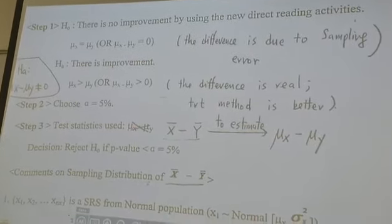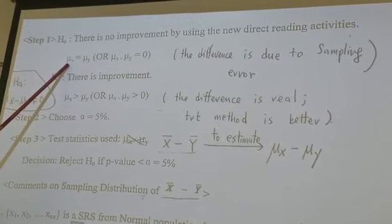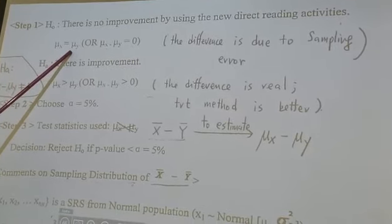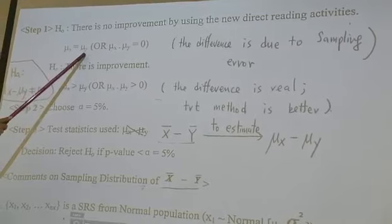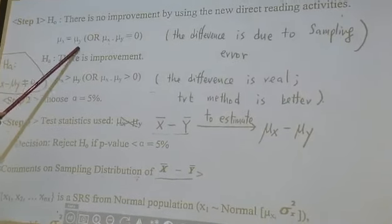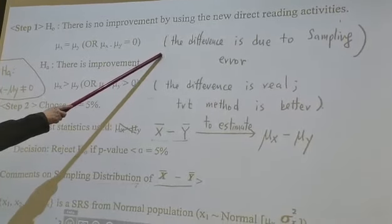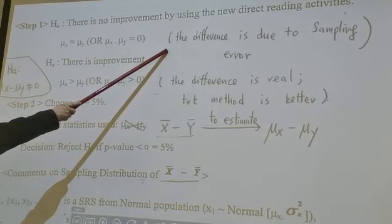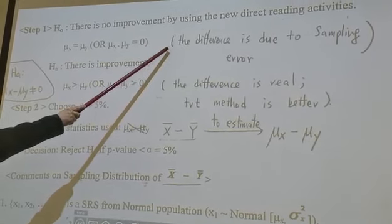If the true DRP test score for the treatment group and the true DRP test score for the control group, they are the same. That means you see the data, right? The data x̄ is bigger than ȳ. Why explain that difference?